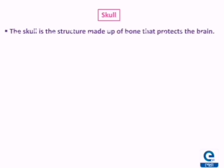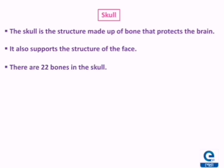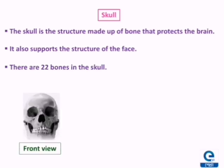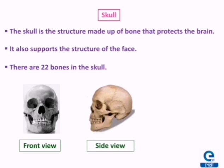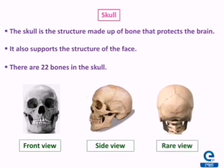The first component is the skull. The skeleton which encloses the brain is known as the skull. The skull is the structure made up of bone that not only protects the brain but also supports the structure of the face. There are about 22 bones in the skull, and you can see the front view, the side view, and the rear view of the skull.